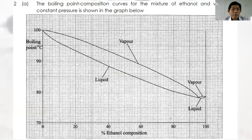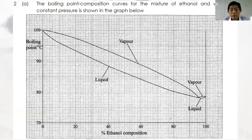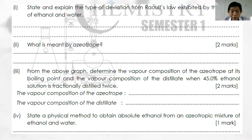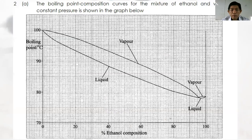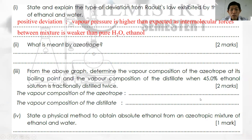Structure Question 2: A boiling point composition curve of ethanol and water at constant pressure is given. Question 2a: State and explain the type of deviation. The azeotropic mixture has a boiling point lower than expected, so this is a positive deviation. The vapor pressure is higher than expected since the intermolecular forces between the mixture components are weaker than between pure water and pure ethanol.